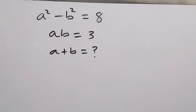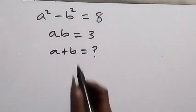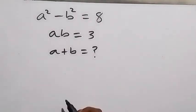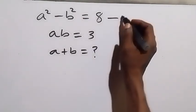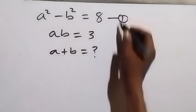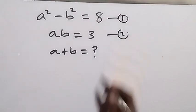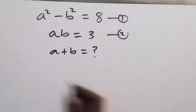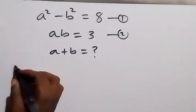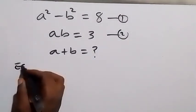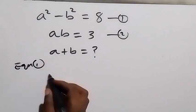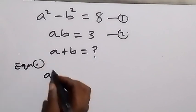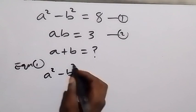Hello, you are welcome. How to find the value of a plus b in this system of equations. Label this as equation 1 and here as equation 2. From equation 1 we have a squared minus b squared.